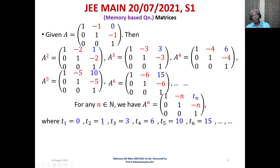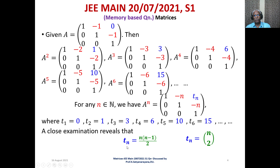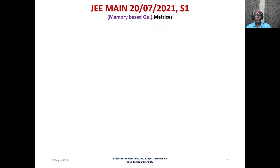However, ₙC₂ doesn't make sense when n = 1, since ₁C₂ has no meaning. But ₙC₂ = n(n-1)/2, and if we use that formula, it works even for n = 1: 1×0/2 = 0. Therefore tₙ = n(n-1)/2 works for all n.